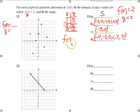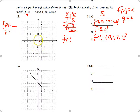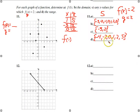For the range, we're looking at Y values: there's -4, -2, 0, 1, 2, and 5. I've put them in already.